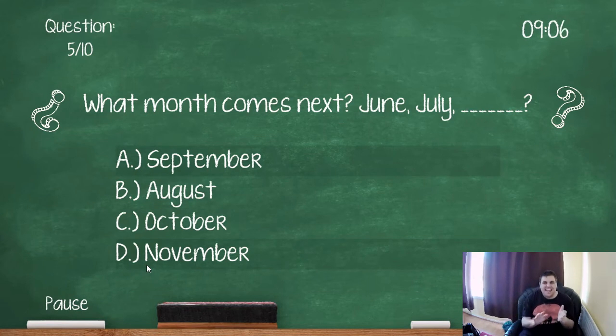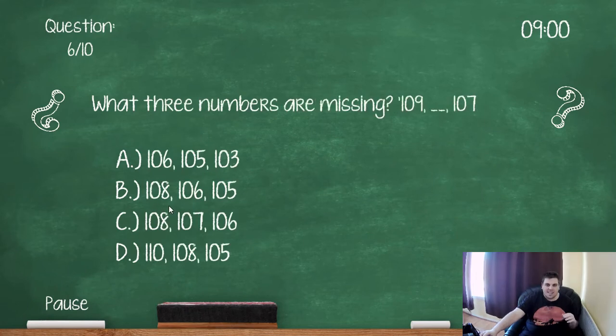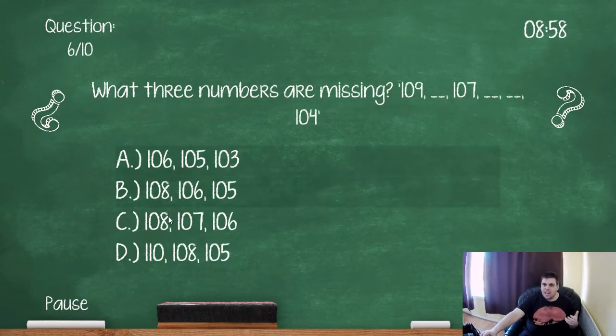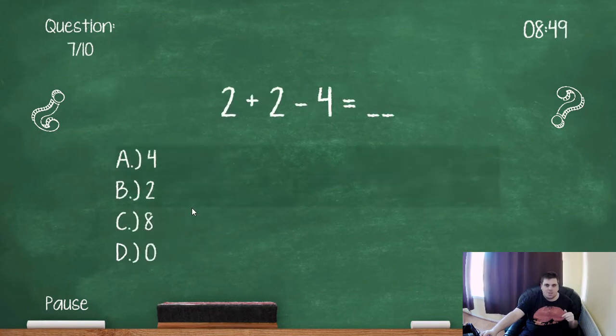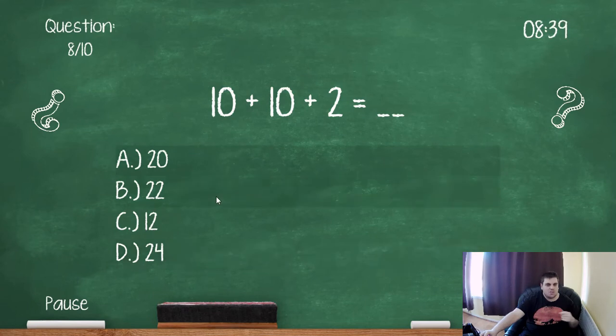What month comes next? June, July, August. What three numbers are missing? 109, 108, 107, 106, 105, 104. So let's just make sure we get that right. So 108, 106, B. 2 plus 2 take away 4 equals... So 2 plus 2 is 4, take away 4 is 0. 10 plus 10 plus 2, 22.